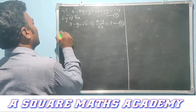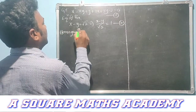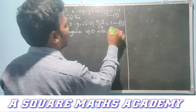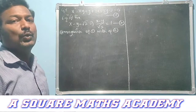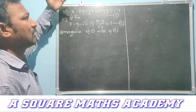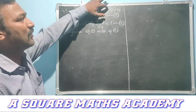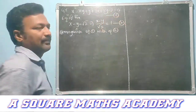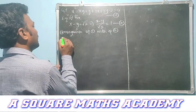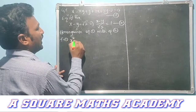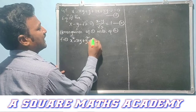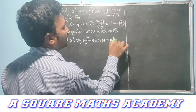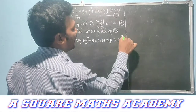We homogenize equation 1 with equation 2 using the substitution 1 = (x − y)/√2. From equation number one: x² − xy + y² + 3x·(1) + 3y·(1) − 2·(1²) = 0.